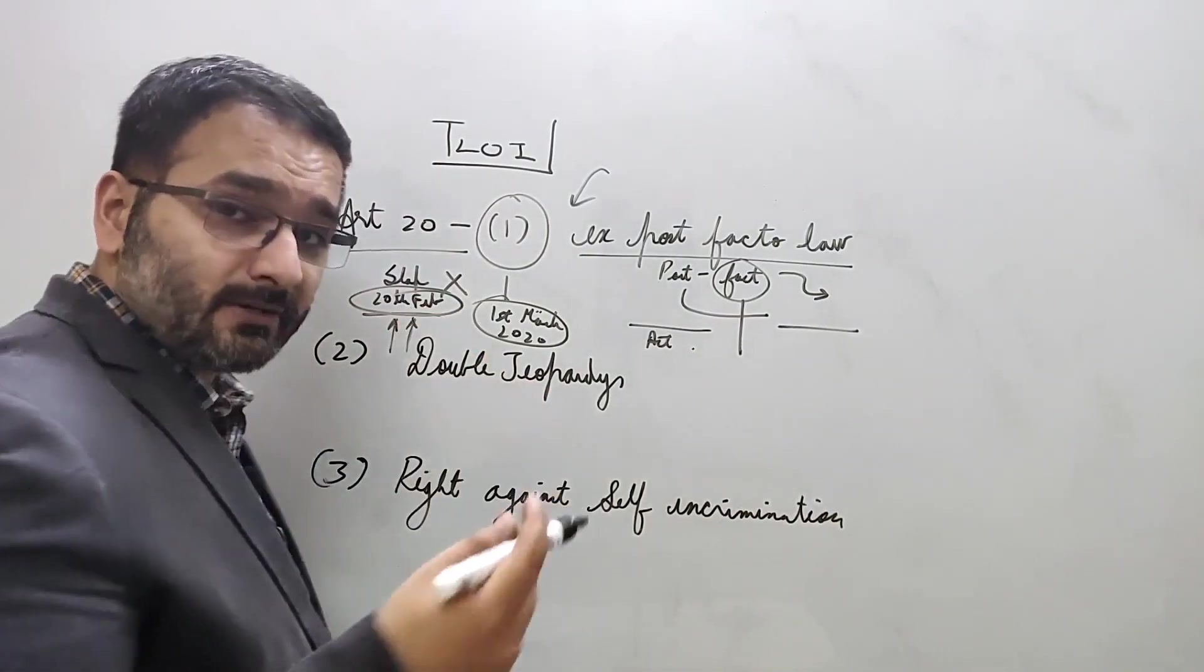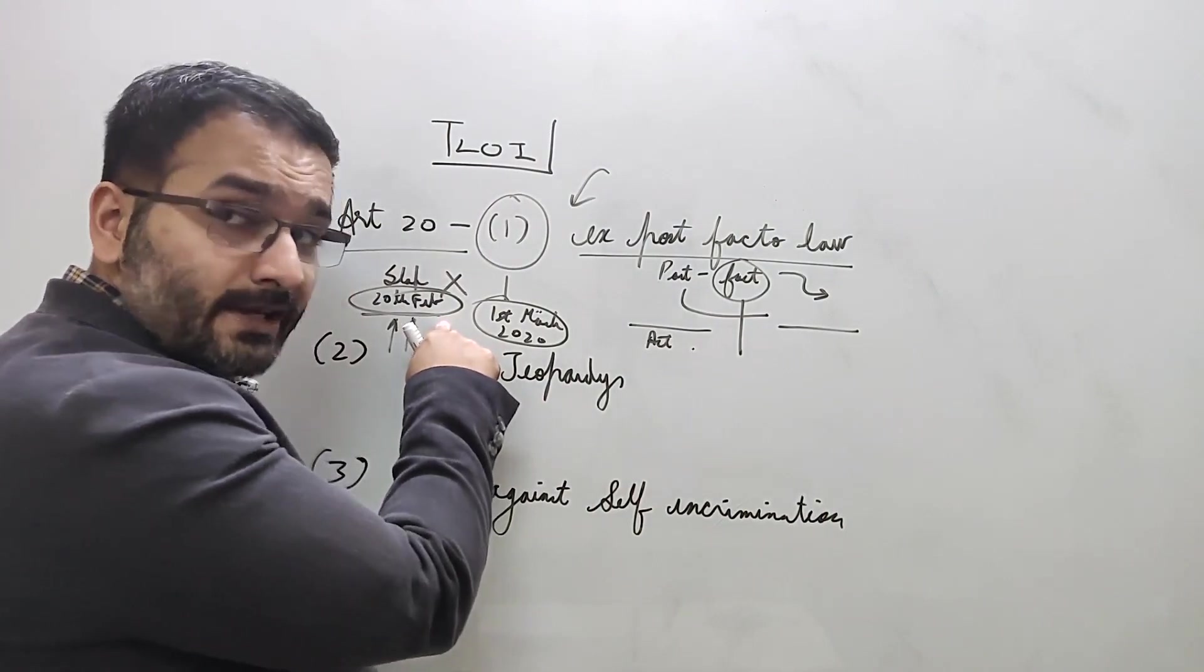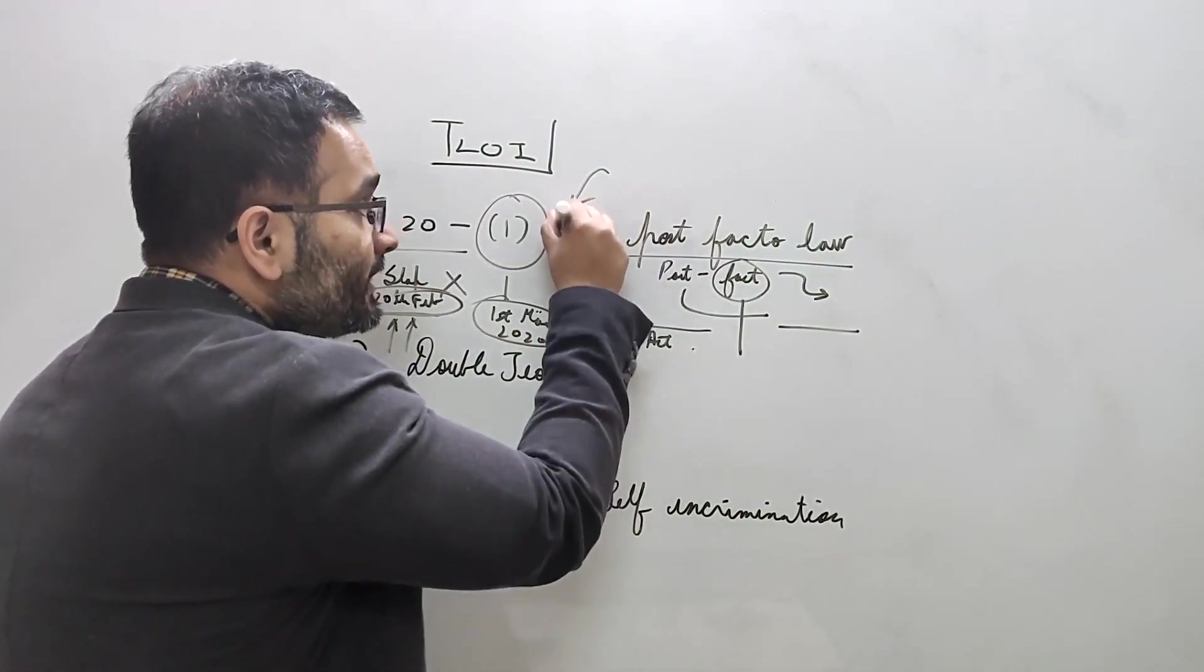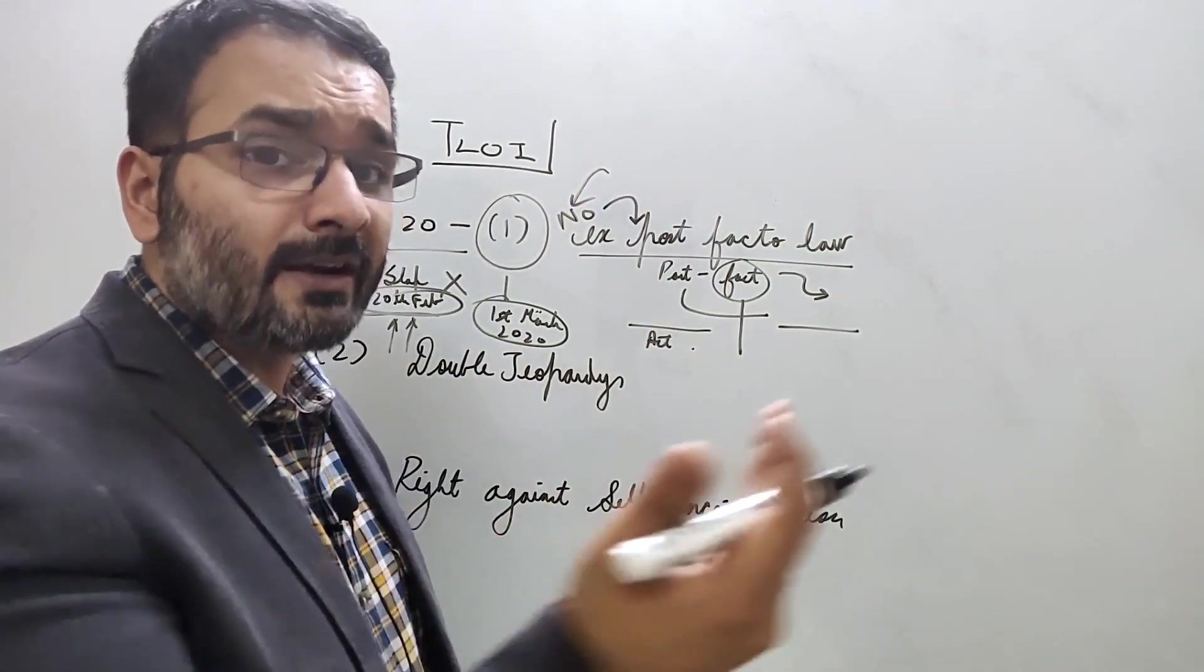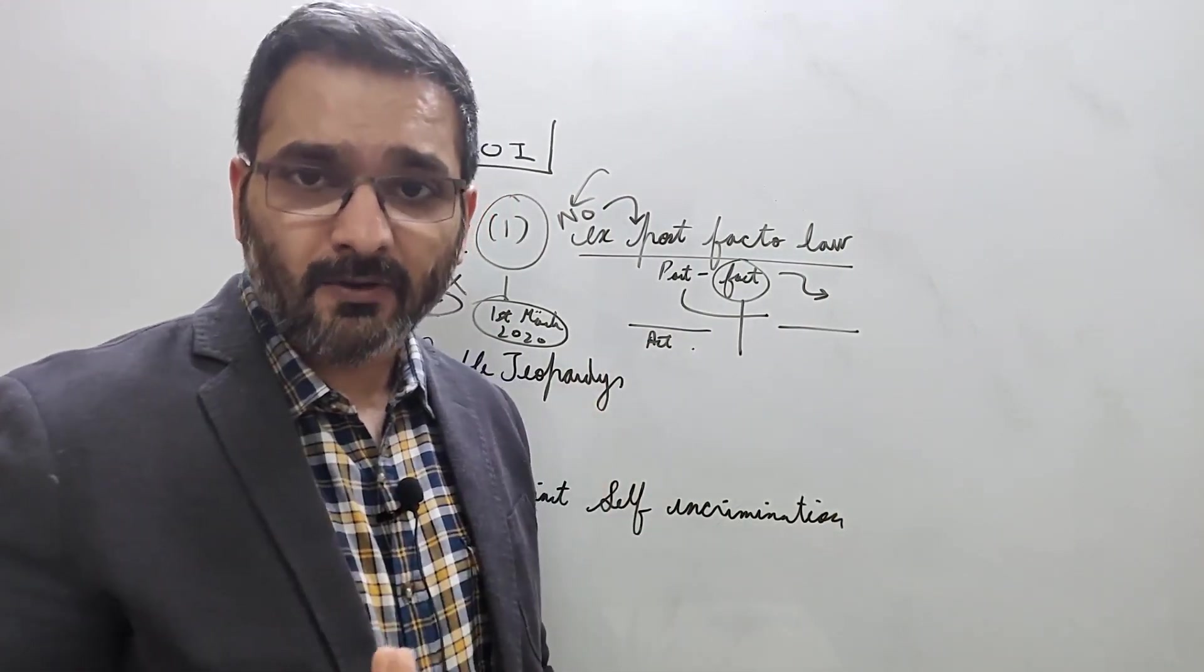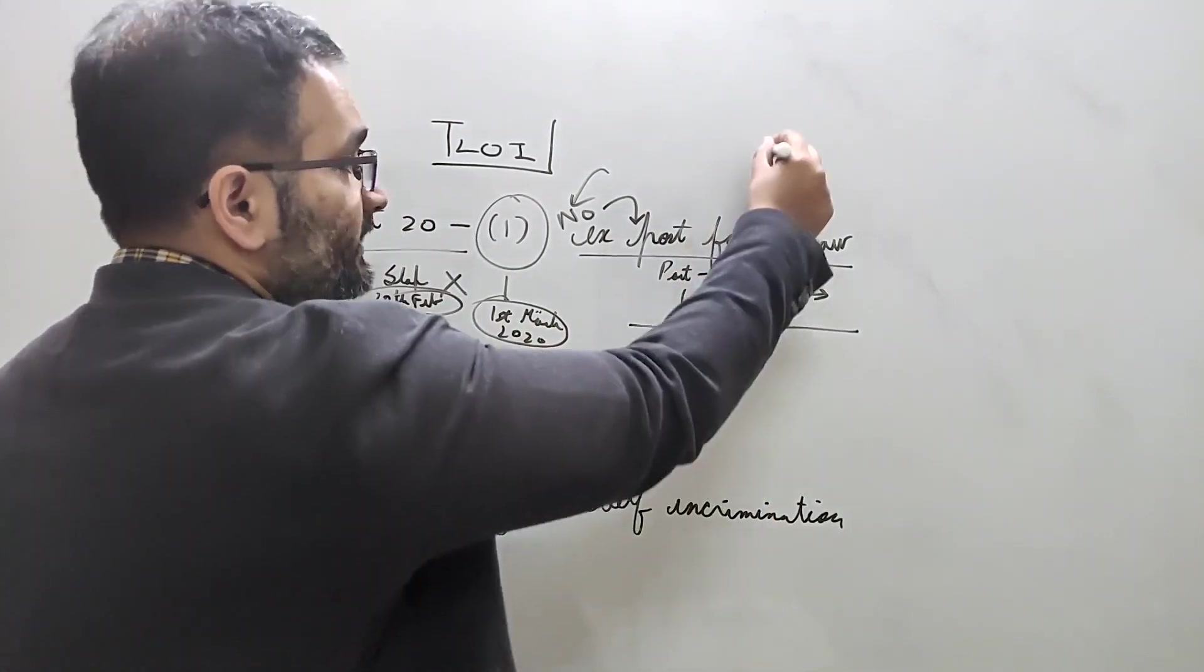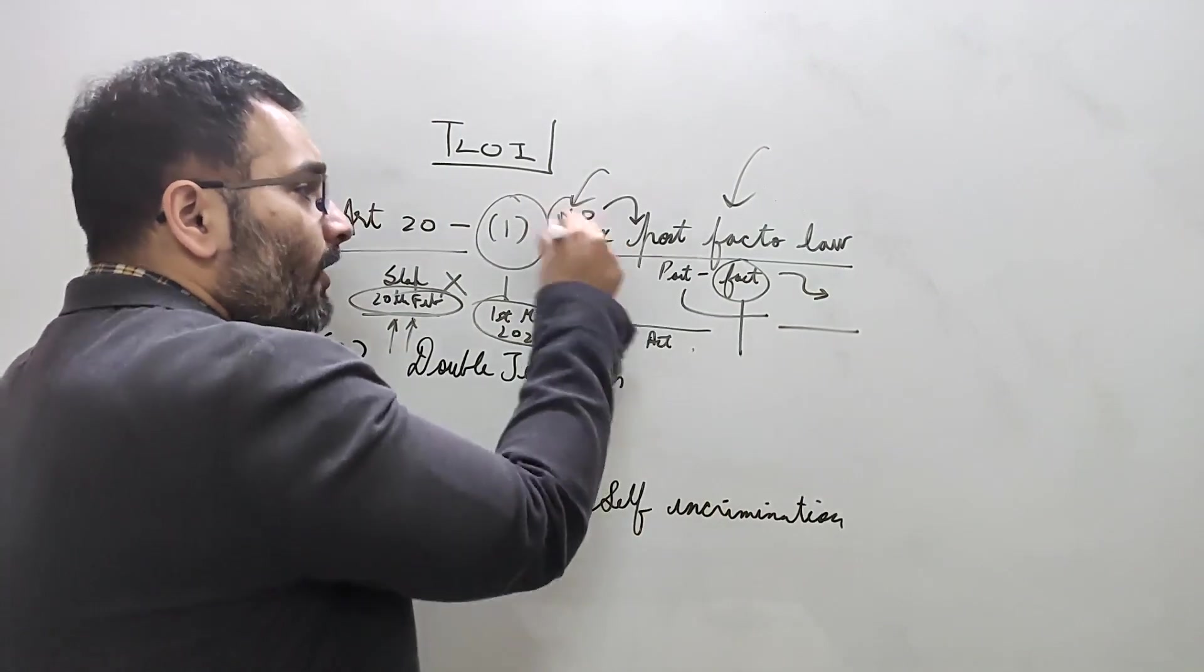If they allow this, it's called an ex post facto law. Our Article 20 clause 1 is saying no ex post facto law in criminal matters. In civil matters, retrospective laws can be applied, like in the Vodafone tax matter. But in criminal matters, not allowed. This is what is known as an ex post facto law.